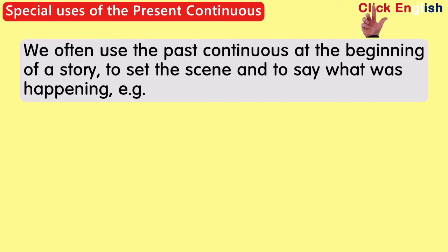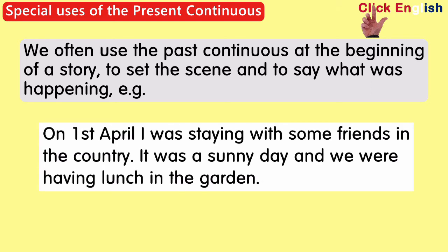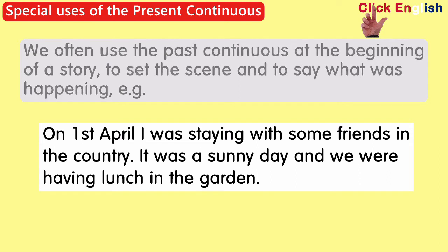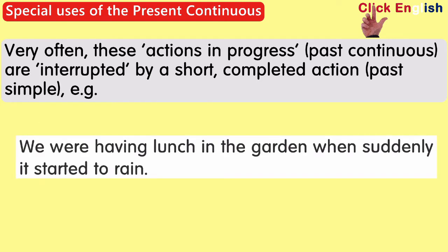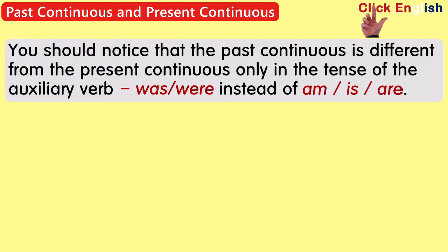We often use the past continuous at the beginning of a story to set the scene and to say what was happening. For example: On first April I was staying with some friends in the country. It was a sunny day and we were having lunch in the garden. Very often these actions in progress — past continuous — are interrupted by a short completed action — past simple. For example: We were having lunch in the garden when suddenly it started to rain. You should notice that the past continuous is different from the present continuous only in the tense of the auxiliary verb: was/were instead of am/is/are.